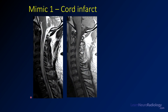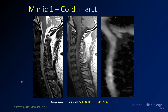Our first mimic is a cord infarct. We have a T2 abnormality that goes from C2 down into the upper thoracic spine. On post-contrast imaging, there's a little bit of wispy enhancement. It doesn't really look like there's a focal mass-like component, even though the cord is a little bit expanded. On diffusion imaging, you can see patchy abnormal DWI signal in the center of the cord.